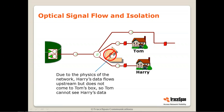If we have two customers — call them Harry and Tom — whatever one sends, the other cannot receive. There's very high isolation. Harry's data will not be seen by Tom and vice versa. Only the OLT will see what they're sending, and in the other direction, whatever the OLT sends, all the customers will see. This is an important point to keep in mind — we'll get back to this later.